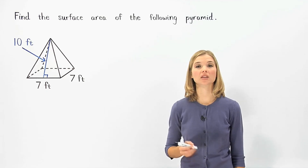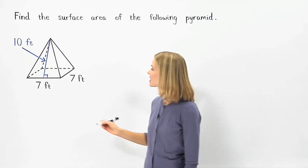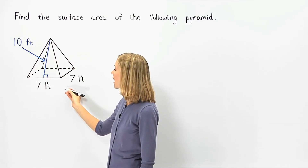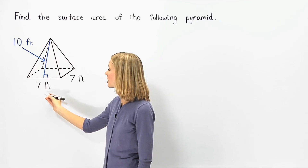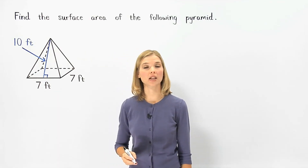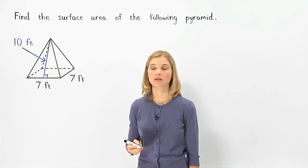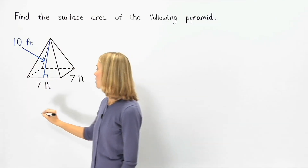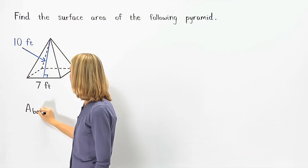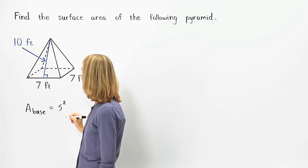Let's start with the base of the given pyramid. We can see that the base is a square with sides that each have a length of 7 feet. Remember that the formula for the area of a square is side squared, so the formula for the area of the base of the pyramid is side squared.